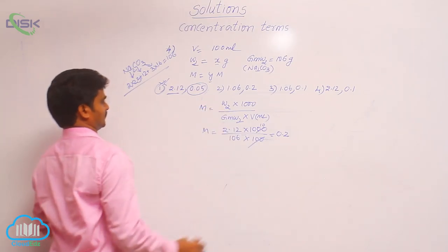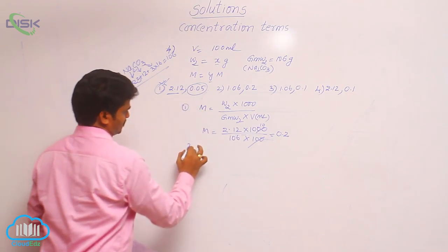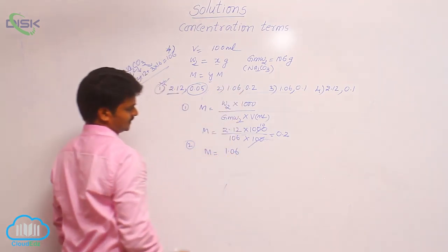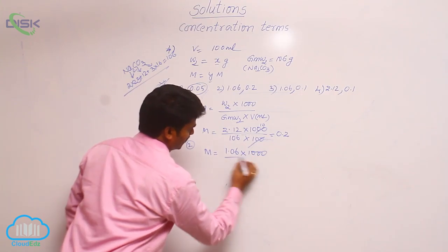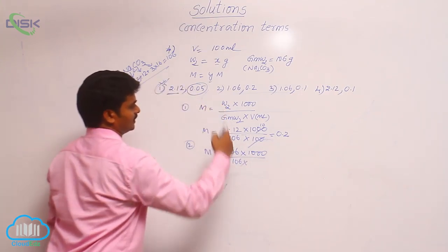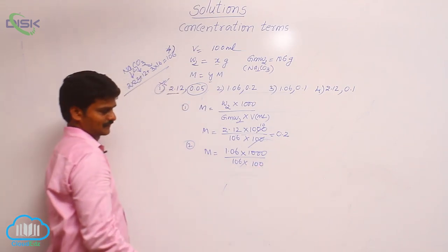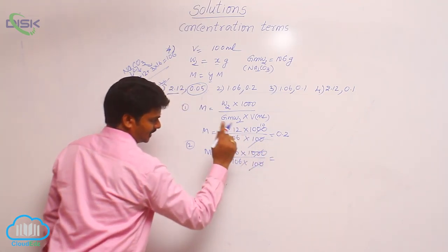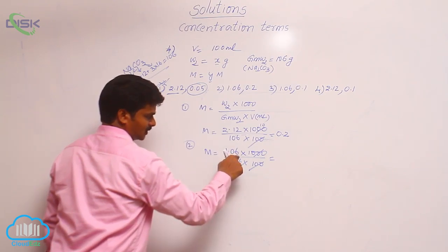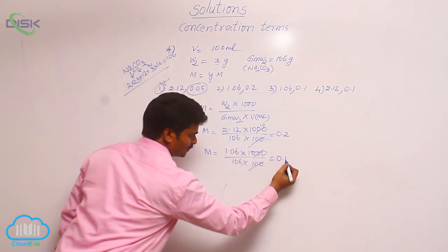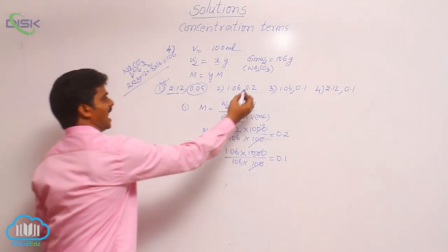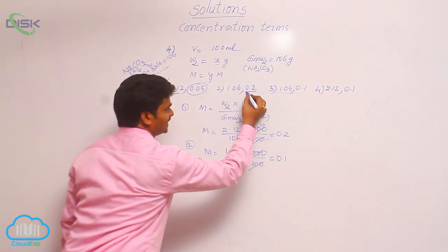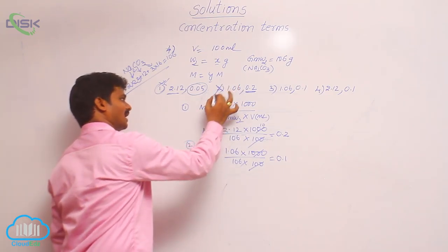Now let us verify option 2. Molarity = 1.06 × 1000 divided by 106 × 100. 1000 divided by 100 is 10 times. So 10 × 1.06 = 10.6. Dividing 10.6 by 106 gives 0.1. So substituting the first value gives 0.1, but option 2 states 0.2. That is why option 2 is also wrong.